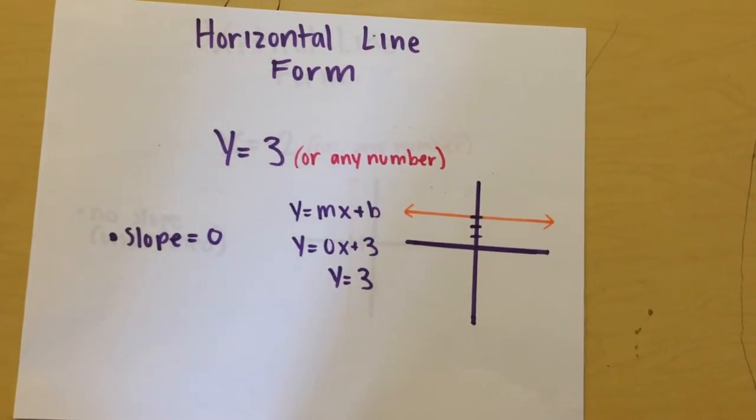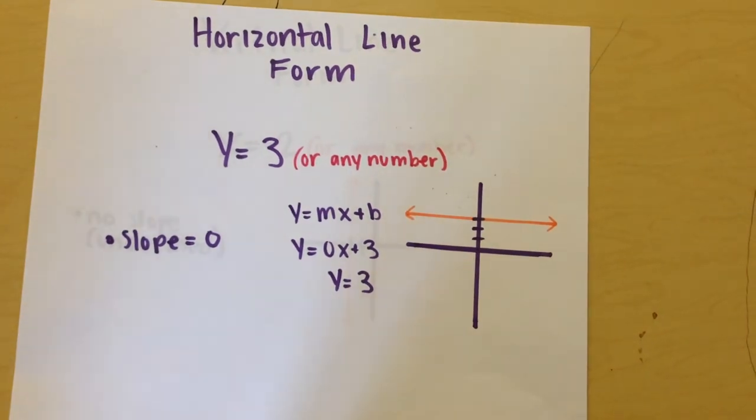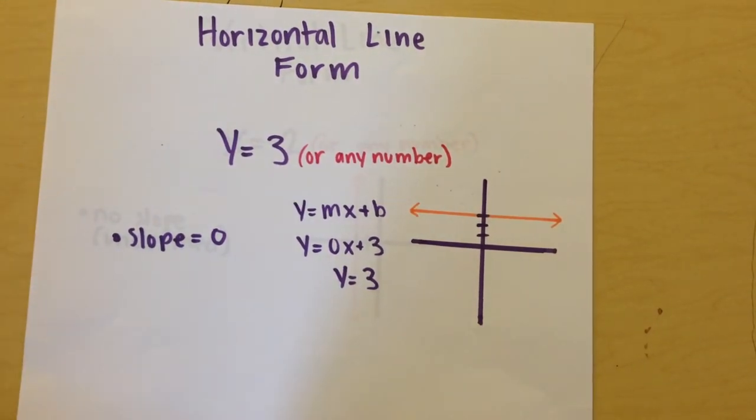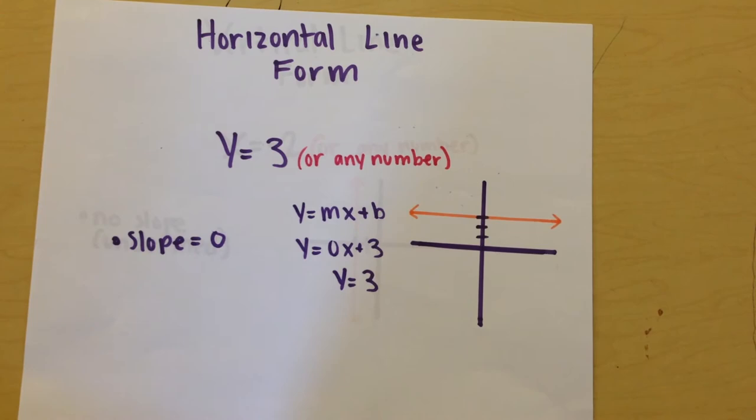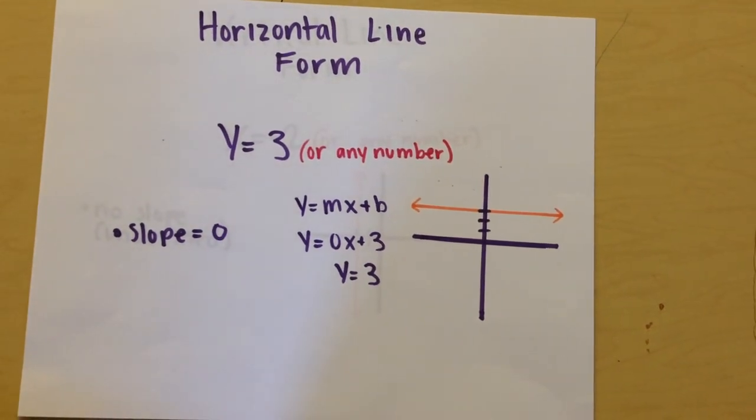Horizontal line form is when you set Y equal to any arbitrary number, as seen here. And it's only shown like this because X is equal to zero, so we get to eliminate it from the equation.